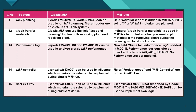For performance log: the reports RMMDMONI and RMMDPERF can be used to analyze classic MRP performance. In MRP Live, a new field 'name of the performance log' is added in MD01N, and performance logs can later be checked by a new Tcode: MD_MRP_PERF_LOG.